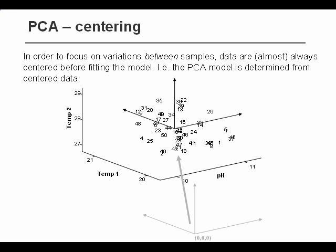Something that we haven't discussed up till now is pre-processing of the data. In PCA, we normally center the data initially. This is an operation that simply helps PCA focus on the variation between the samples, instead of focusing on the absolute level of the variation.